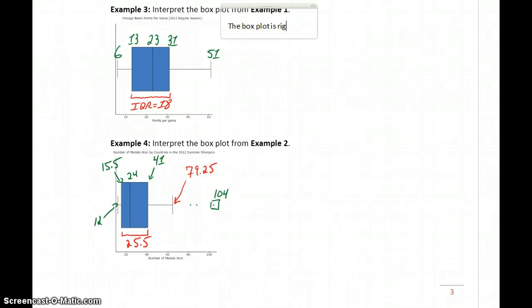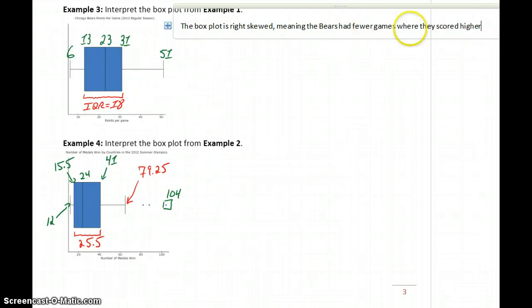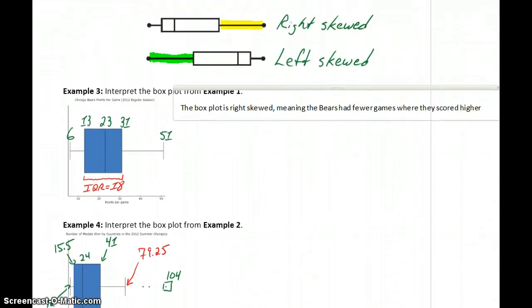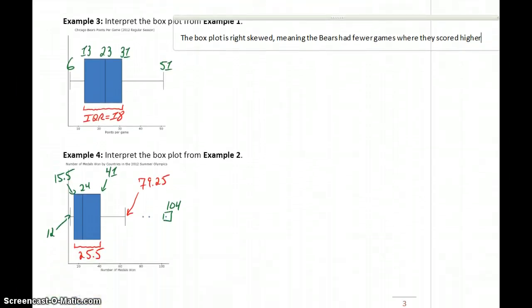the box plot is right-skewed. Since we have that longer tail or that longer line extending off to the right, our box plot is right-skewed, meaning the Bears had fewer games where they scored higher numbers of points.